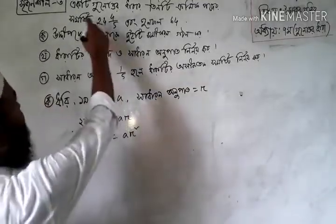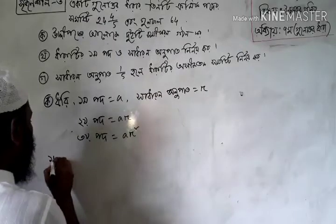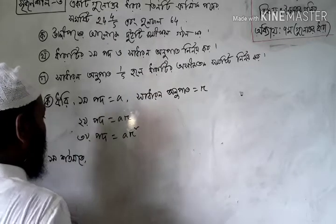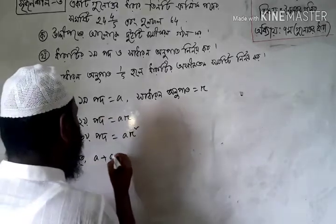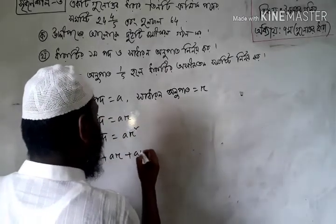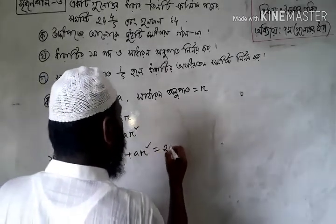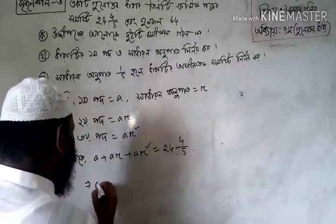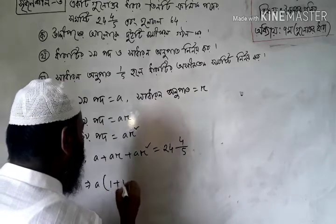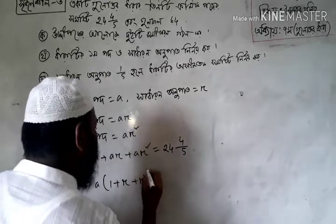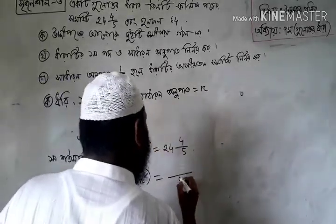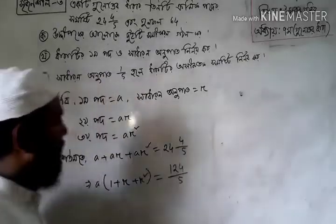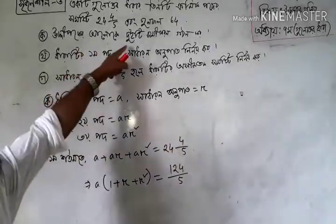This is the same. The table is not the same. A plus aR plus aR squared. The table is 1. So what we have to do is: 1 plus R plus R squared minus 8. Then 2 plus R squared minus 8.